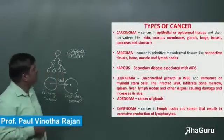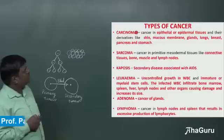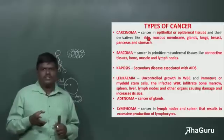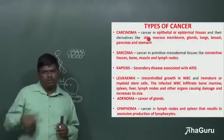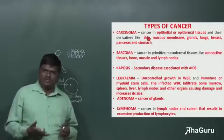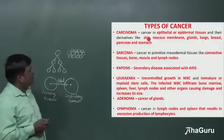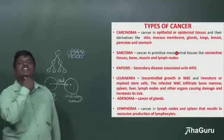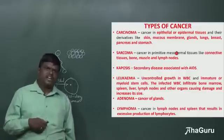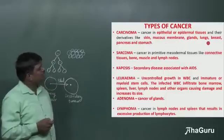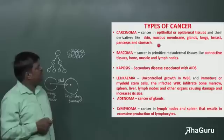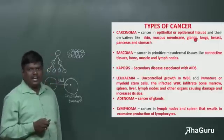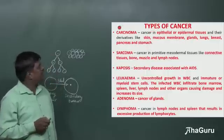Types of tumors — we have carcinoma. This is cancer in the epithelial or epidermal tissues, that is the outer layers. We can see cancers in the case of skin, mucous membrane (inside the respiratory tract, anal tract, digestive tract), and glands, lungs, breast, pancreas, and stomach. When cancer is seen in these regions, we call it carcinoma.